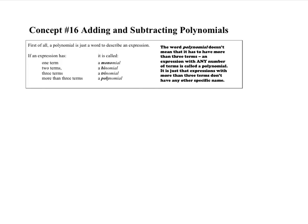Many of you might be looking at that word 'polynomial' going, oh my gosh, what does that mean? Well, a polynomial is just a word that describes an expression. There are three different types of polynomials that are more specific. We learned yesterday about terms. If we have just one term, that's called a monomial. If you've got two terms, that's a binomial. If you've got three terms, that's a trinomial. And if you've got more than three terms, we just use the generic word polynomial. All of these, however, are still polynomials — it's just that these have very specific names.